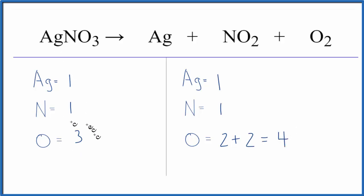Usually when I have an odd number of oxygens, I like to double that. If I get that to an even number, it makes things a lot easier. So I'm going to put a two in front of the AgNO3.